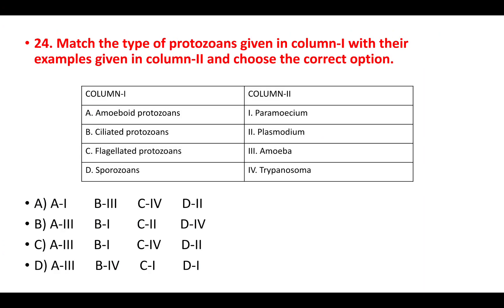Question 24: match the type of protozoans with their examples. Amoeboid protozoan — Amoeba; ciliated protozoan — Paramecium; flagellated protozoan — Trypanosoma; sporozoan — Plasmodium. The correct answer is option C.